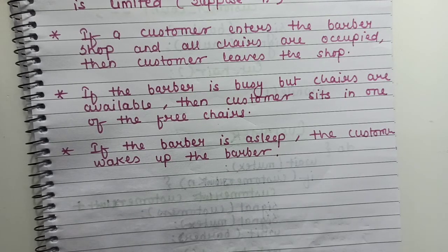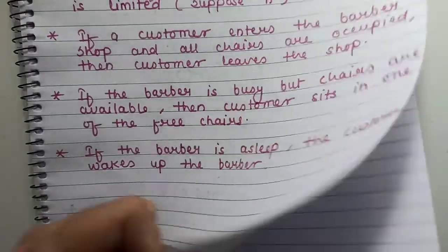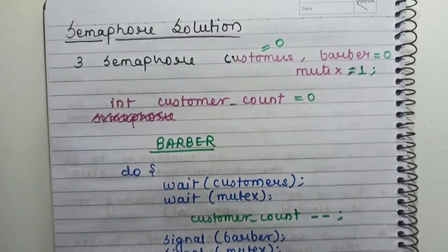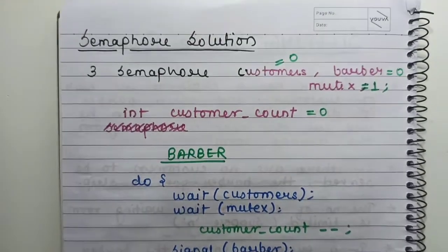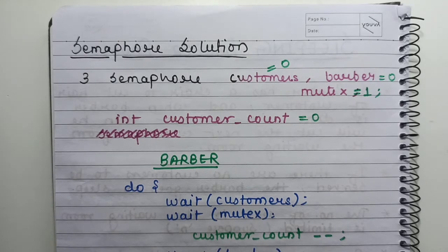The customer semaphore has to be initialized to zero and signaled by the customer when the first customer enters the barber waiting room. Now, how would we solve this problem? The semaphore solution for the sleeping barber problem requires three semaphores.